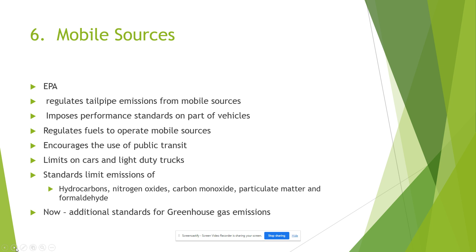The EPA encourages use of public transit. There are currently numerical limits on cars and light duty trucks — SUVs and personal trucks — for hydrocarbons, nitrogen oxides, carbon monoxide, particulate matter, and formaldehyde. And since 2011, after Massachusetts v. EPA, there are additional standards for greenhouse gas emissions for mobile sources.